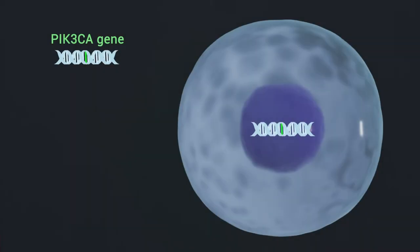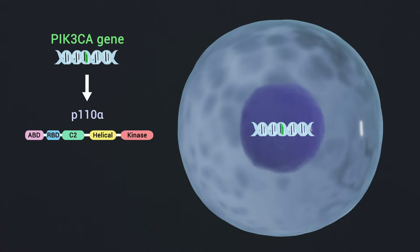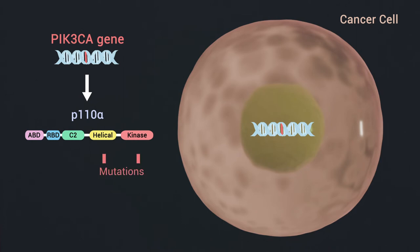The PIK3CA gene, which encodes the P110 alpha catalytic subunit, is frequently mutated in human cancers, and most PIK3CA mutations are clustered in the helical domain or the kinase domain.